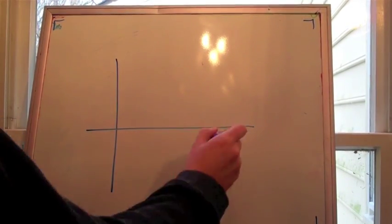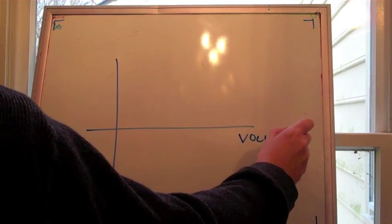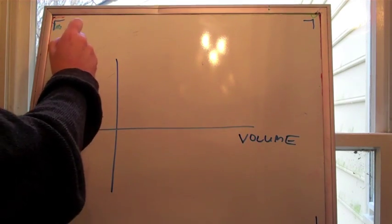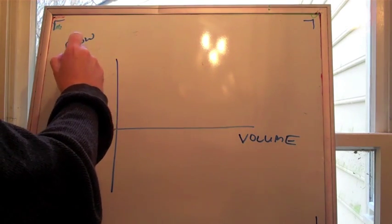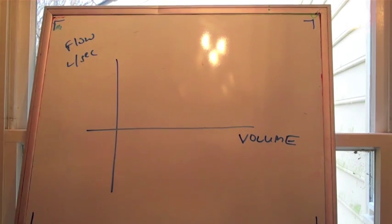Now, just for a review, for spirometry, you have volume of air on the x-axis, flow of air on the y-axis, and that's liters per second.